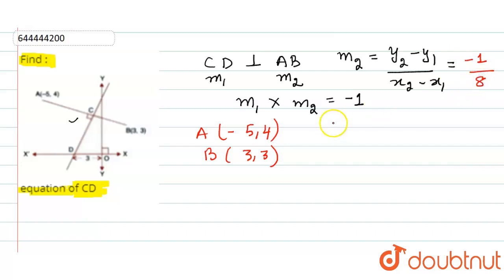So the slope m2 is minus 1 by 8. Putting this in the formula, m1 into minus 1 by 8 equals minus 1. So the value of m1 equals 8.